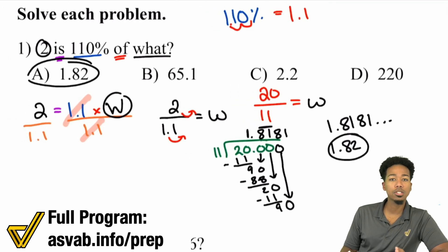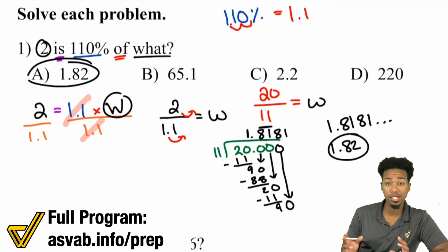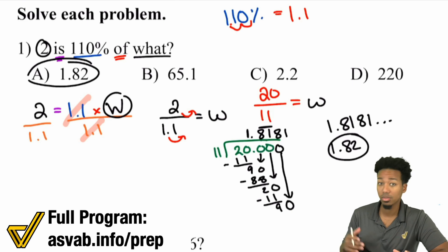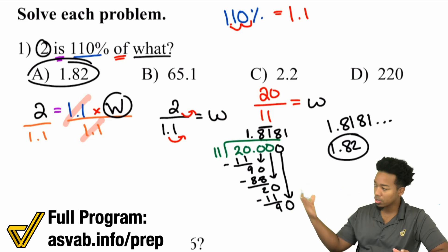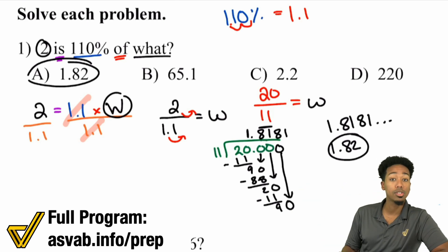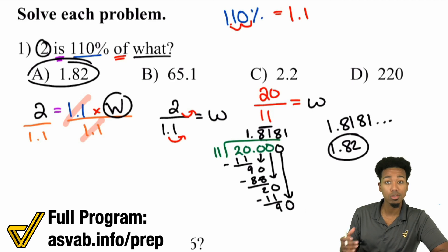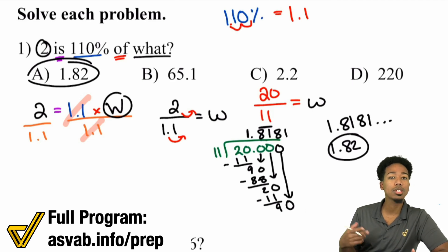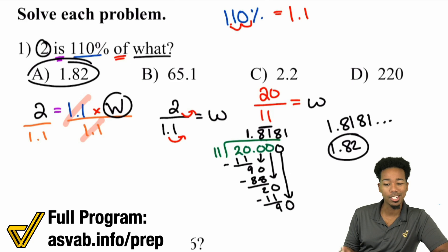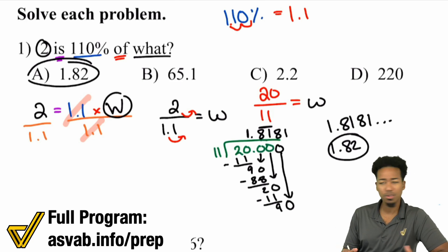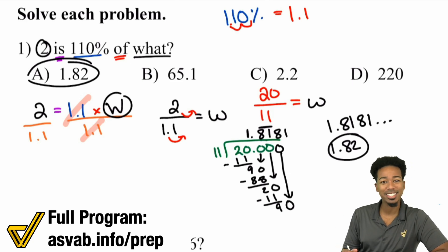Don't feel nervous about the numbers — these are just numbers and decimals. If you forgot how to divide by decimals, go to the decimal section of the course. And again, we're working backwards — that's all we're doing. Let me go ahead and take you through three or four more examples because I've got your back.